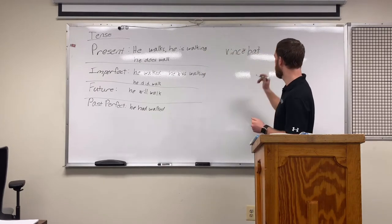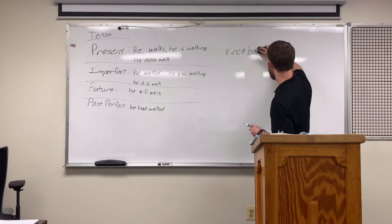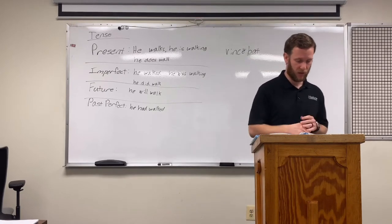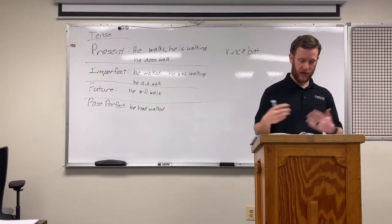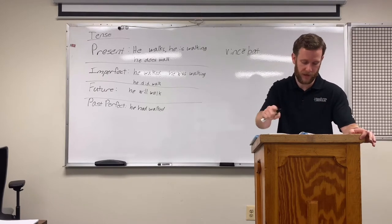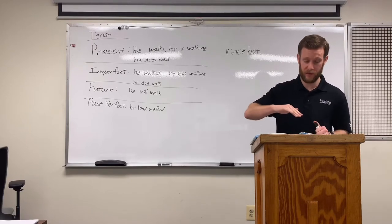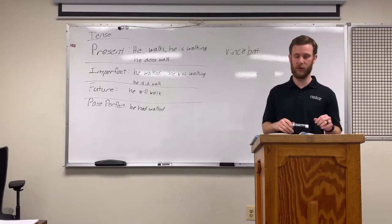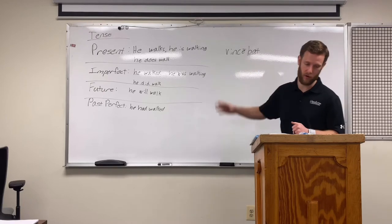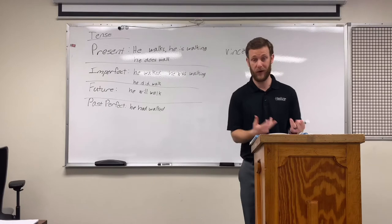It says right there: vowels are never long before the inflections T and NT — go ahead and highlight or underline that. So our vowel in ba is short. If it was followed by an S — that's not T or NT — then it would be long. This tense sign for the imperfect tense is used in regular verbs. We know the difference between regular and irregular now — 'walk' is regular because you can add -ed to make it past; 'run' is not regular because you cannot just add -ed.